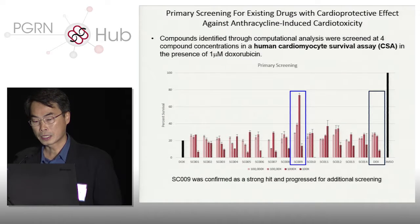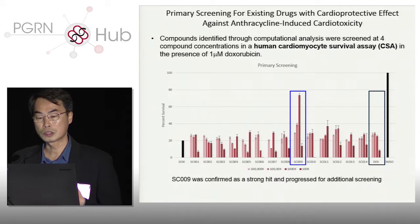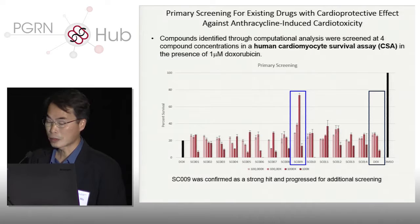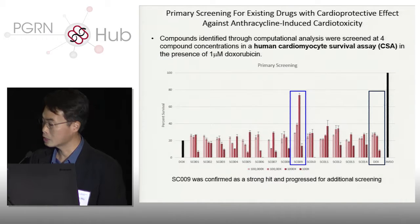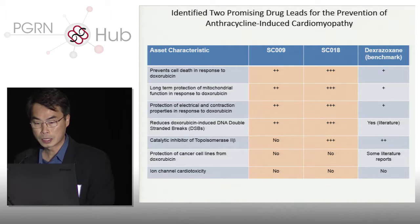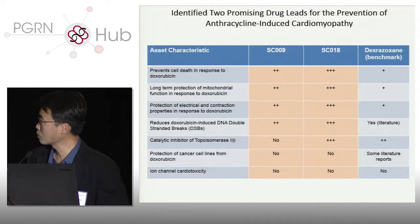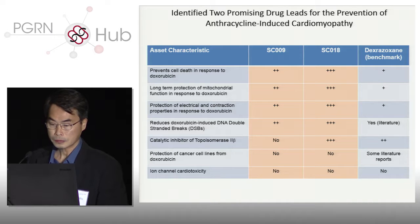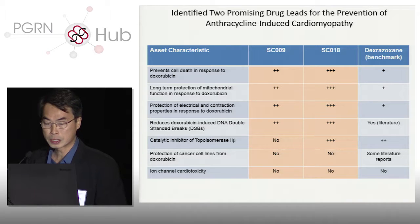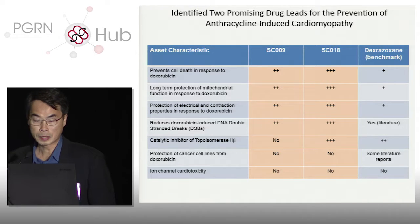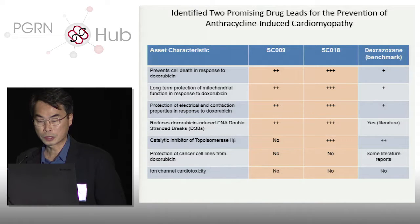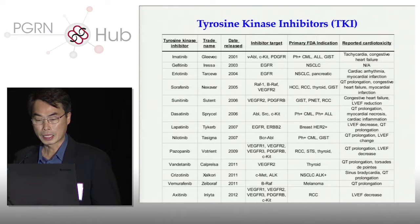Once you have these human iPSC cardiomyocytes, you should be able to develop some kind of screening to see what drugs can improve survival of these cells. In collaboration with a local startup company, we screened 10-plus medications and compared them to dexrazoxane, the FDA-approved medication for protecting against doxorubicin-induced cardiac toxicity. Out of these 10 medications, we found two — in particular SC018 — that compared favorably to dexrazoxane. It prevents cell death in response to doxorubicin, provides protection against mitochondrial damage and contractility, reduces double-stranded DNA breaks, and has no effect on cancer killing. This platform allows high-throughput drug screening to prevent doxorubicin cardiotoxicity.